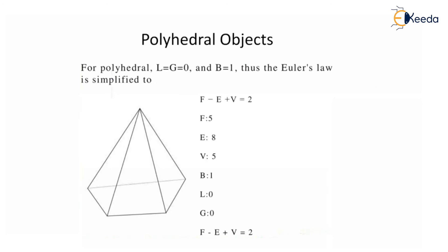Let's solve some problems. For a polyhedron, L equals G and B equals 1, so loops equal genus equal 0 — there are no loops. Thus, the Euler formula simplifies to F minus E plus V equals 2. For a polyhedral, faces are 5, edges are 8, vertices are 5. So F minus E plus V: 5 minus 8 plus 5 equals 2, which confirms the formula.